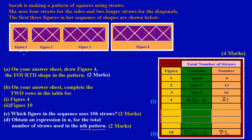In the first diagram — figure number one — let's count the number of straws used to make this figure: one, two, three, four, five, six. So in figure number one we had a total of six straws required to make it.